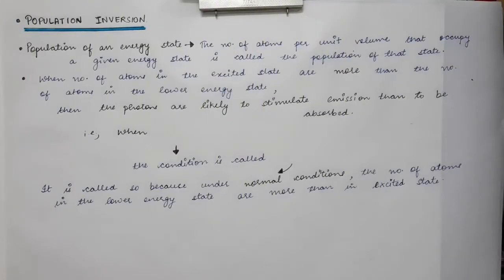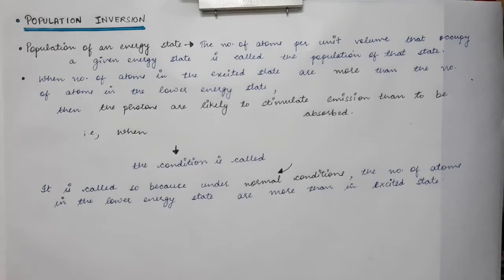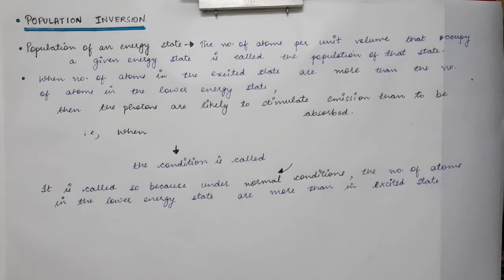The next topic is population inversion and we will do a little mathematical analysis of it. As discussed in previous lectures, for lasing action to occur, population inversion is a very mandatory condition that must be achieved in the medium. We will first revise what population inversion is and then do a mathematical analysis.